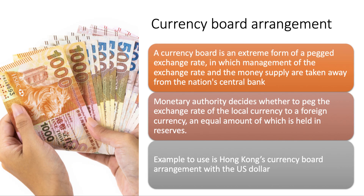A currency board arrangement only applies to just a few countries — it's actually a hard peg. The currency board is when the management of the exchange rate and the money supply is taken away from the central bank. An independent monetary authority decides to peg an exchange rate to a foreign currency and they always hold back an equal amount of the foreign currency in their reserves. The best example is Hong Kong, which for over three decades has had a currency board arrangement with the US dollar.